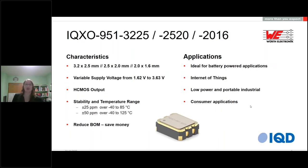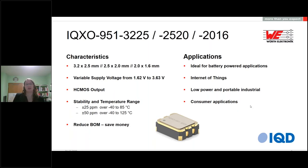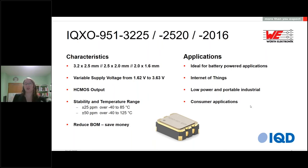The next product I want to introduce is the IQXO 951, currently only available via IQD Frequency Products. The special feature of these oscillators is their variable supply voltage — the complete voltage range is 1.6 to 3.6 volts, which is perfect for all kinds of battery-powered applications. Usually an oscillator is calibrated to a fixed voltage, and once it drops below the specified plus or minus 5% or 10%, the oscillator can lose its accuracy — which is definitely not what you want.